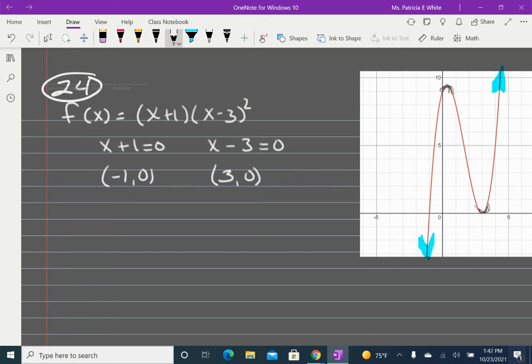For my y-intercept, if x is 0, I'm going to say 0 plus 1 times 0 minus 3 squared. That gives me 1 times 9. So my y-intercept is (0, 9). So let's look at them over here. I have there's my (-1, 0), my (3, 0), and my (0, 9). So those are those three points.